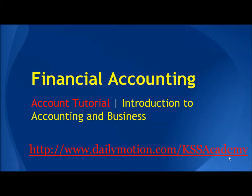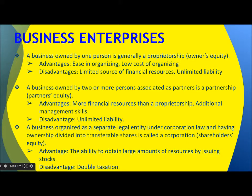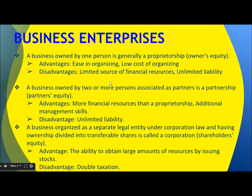Hello, today we are going to learn about financial accounting. Before we start on actual financial accounting, let's learn about what kinds of businesses exist. The first kind is called a proprietorship — a business owned by one person. The advantage is ease and low cost of organizing. The disadvantage is limited financial resources and unlimited liability.